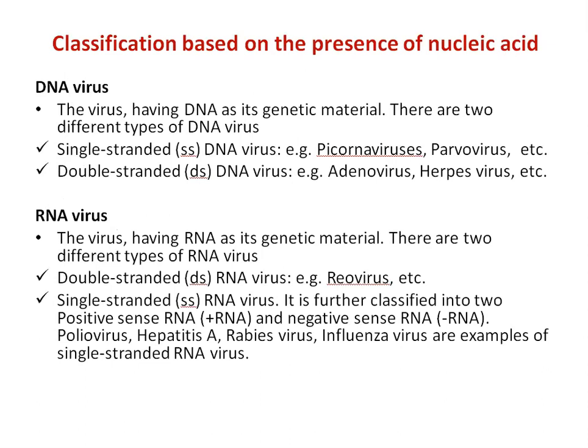The first classification is based on the presence of nucleic acid. Two types of viruses are identified: DNA virus and RNA virus. A DNA virus has DNA as its genetic material. There are two different types of DNA viruses: single-stranded DNA viruses — for example, parvoviruses — and double-stranded DNA viruses — for example, adenovirus.